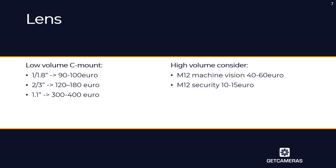There are also M12 security lenses available in the market, much cheaper at 10 to 15 euros. The main differences between machine vision M12 lenses and M12 security lenses are geometric distortion and product life cycle. Machine vision M12 lenses have very low distortion — almost zero — while security lenses often have a lot of distortion. Also, machine vision M12 lenses are available for many years, while security lenses typically go end-of-life between two and three years. Another downside of M12 lenses is a fixed iris, so if you need iris control you always need a C-mount lens.